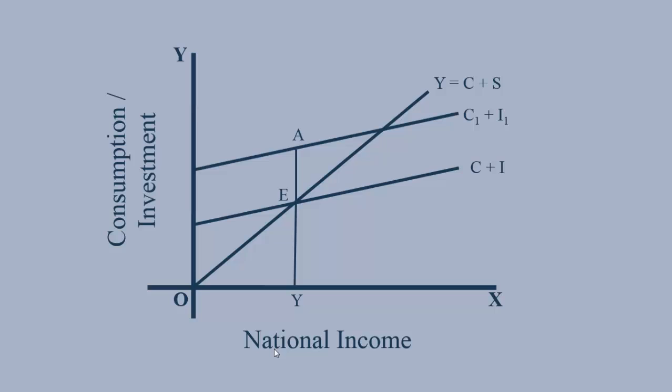C1 plus I1 is the new Aggregate Demand Curve. It cuts the Aggregate Supply Curve at E1. The Equilibrium Income is Y1. The Net Increase in Income is Delta Y.